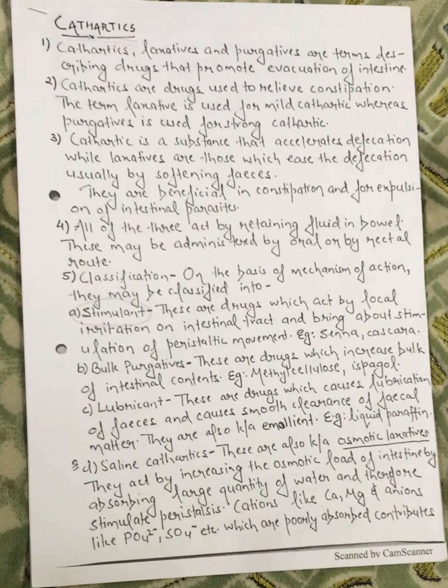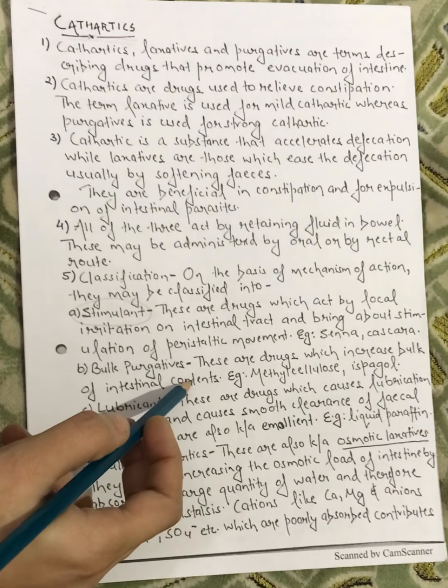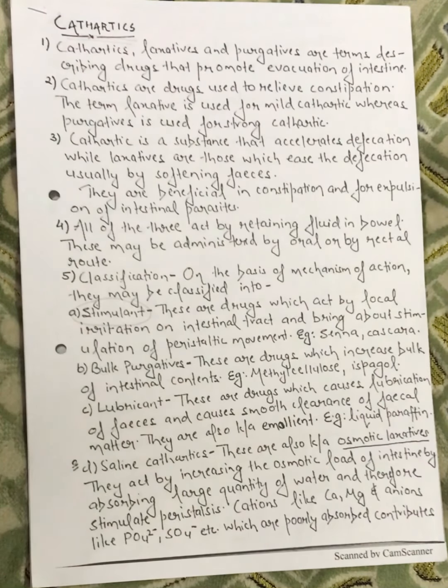Next, we have the bulk purgatives. These are drugs which increase the bulk of intestinal content — that is, they increase the fecal material. Examples include methylcellulose and ispaghol.